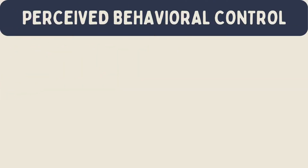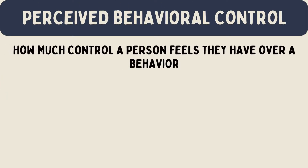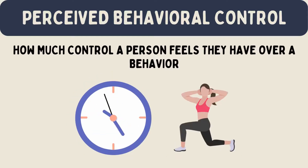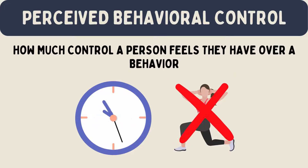Perceived Behavioral Control is how much control a person feels they have over a behavior. If they think it's easy to do, they are more likely to do it. For instance, if someone believes they have enough time and resources to exercise, they will probably do it. If they think it's too hard or they don't have control, they might not try.